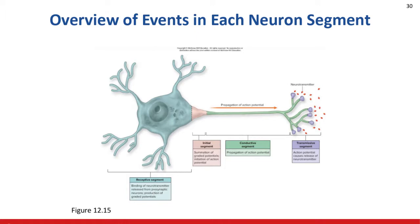We're going to break down each region or segment of the neuron and tell you what is going to transpire there as we try to get a nerve signal that will travel down to the terminal — the very end of our neuron — and then we'll talk about the events that transpire there to transmit that signal to either another neuron or to an effector organ, which is usually a muscle or a gland.